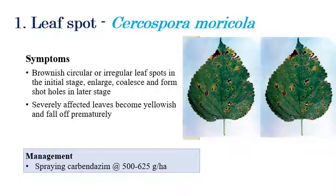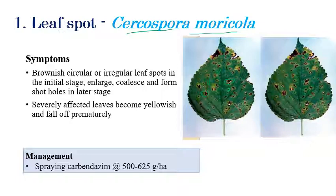First one is leaf spot, which is caused by Cercospora moricola. On the right side we can see the diagrammatic representations. Coming to the symptoms, brown color irregular leaf spots can be seen in initial stages. These small initial spots coalesce and they look like a shot hole symptom in later stages.